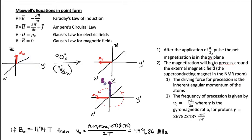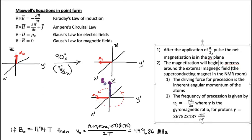The magnetization will begin to precess around the external magnetic field. The external magnetic field is the superconducting magnet that's in the NMR room. The driving force for this precession is the inherent angular momentum of the atom. Inherent just means built-in—just like atoms have mass and protons have charge.